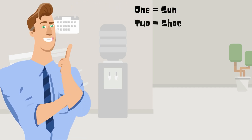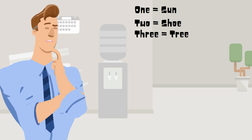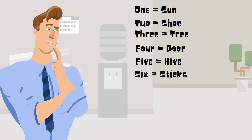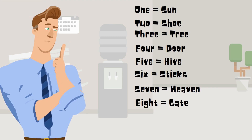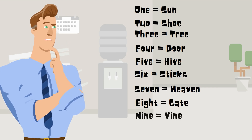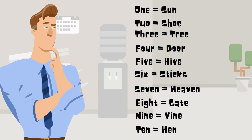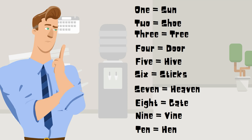1 Sun, 2 Shoe, 3 Tree, 4 Door, 5 Hive, 6 Sticks, 7 Heaven, 8 Gate, 9 Vine, 10 Hen. Once you have memorized this list you then start memorizing.